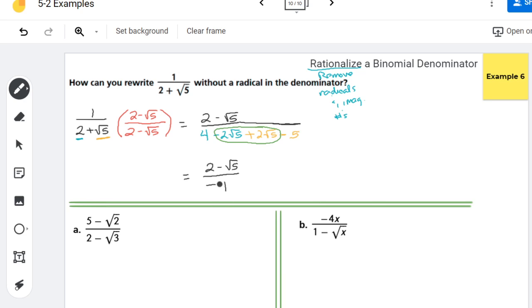And I'm just going to take that negative 1 and divide it in here. So 2 divided by negative 1 is negative 2. And negative root 5 divided by negative 1 is a positive root 5. So there is our final answer.